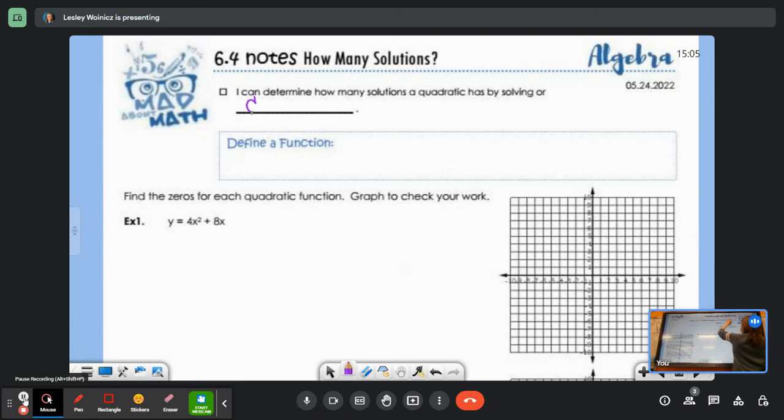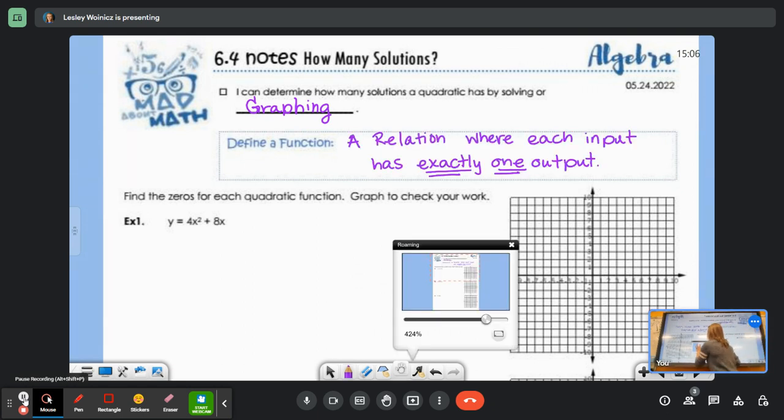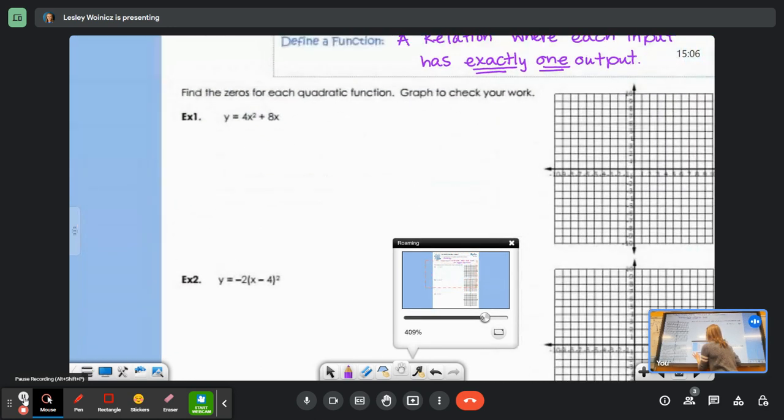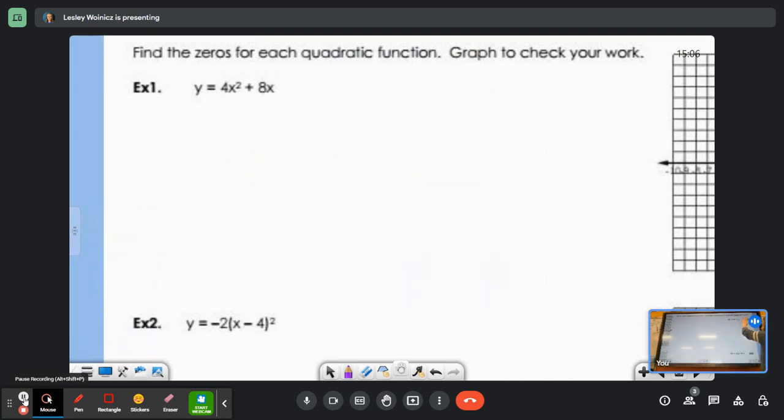By solving and by graphing. So we're going to graph like we did in unit 5 to check our work. First thing I want you to do for me is define a function. We are going to find the zeros, that means the solutions, for each of these quadratic functions, and then we're going to graph to check our work.